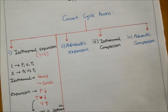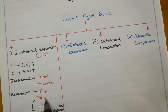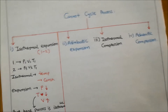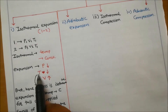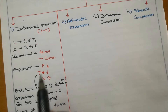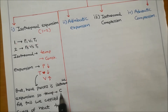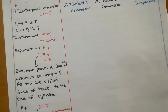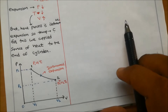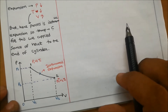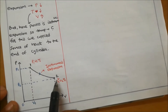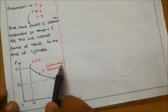In an expansion process, pressure decreases, temperature decreases, and volume increases. Since this is isothermal expansion, temperature must remain constant. To maintain constant temperature, a heat source is applied to the end of the cylinder. On the PV diagram, considering points 1 and 2, pressure decreases and volume increases — this is the isothermal expansion curve.